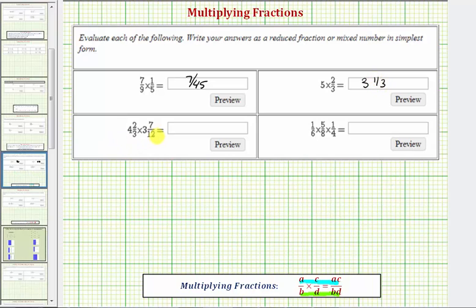Now we have the product of two mixed numbers. We're going to begin by writing these as improper fractions. So the first fraction will have a denominator of three, the second fraction will have a denominator of twelve. The numerator of the first fraction will be three times four plus two, that's fourteen. And the second fraction will have a numerator of twelve times three plus seven, which would be thirty-six plus seven, or forty-three.